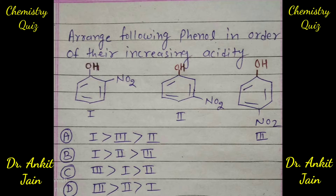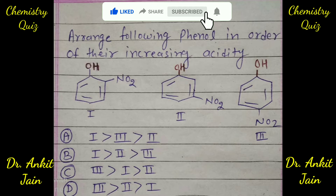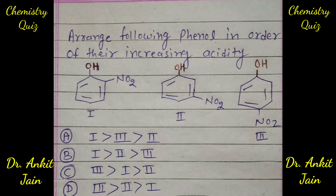In all three structures, you can see there is a nitro group present at the ortho position, meta position, and para position. Electron-withdrawing groups tend to increase the acidity of phenol. The nitro group has both a resonance effect and a minus-I (inductive) effect. However, at the meta position, only the inductive effect will work — the resonance effect will not work at the meta position.